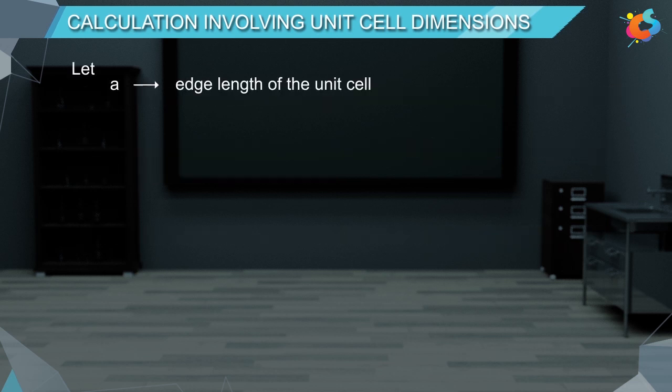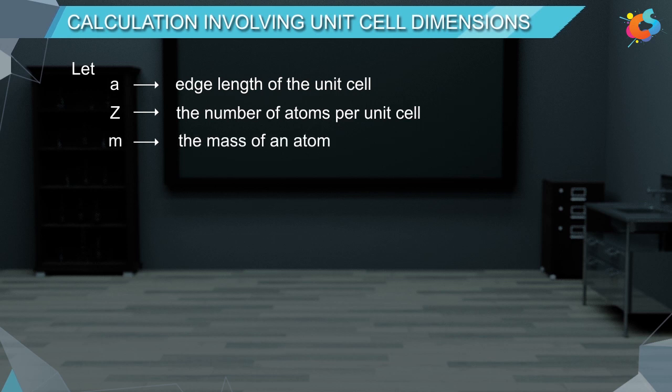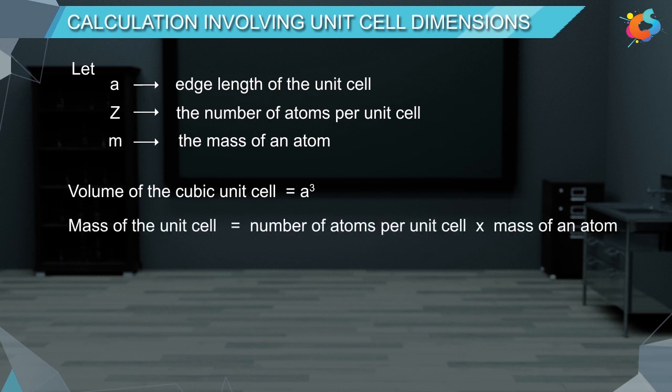Let A be the edge length of the unit cell, Z be the number of atoms per unit cell, and M be the mass of an atom. The volume of the cubic unit cell is equal to A cubed, and the mass of the unit cell is equal to the number of atoms per unit cell multiplied by the mass of an atom — that is, Z times M.